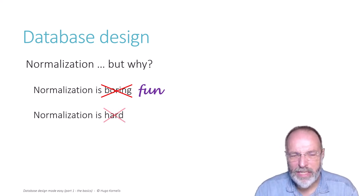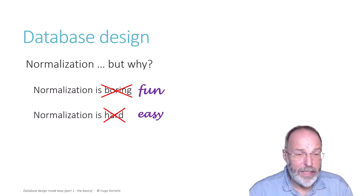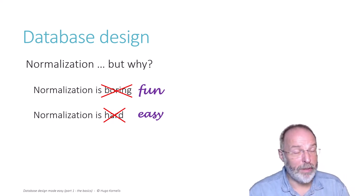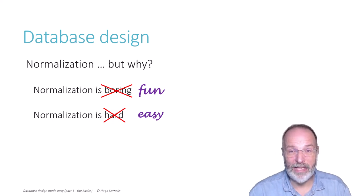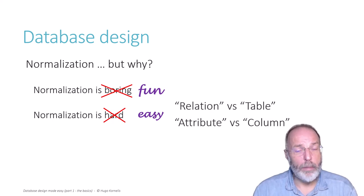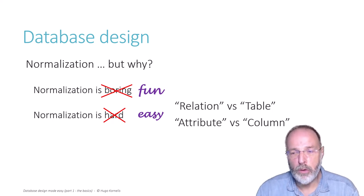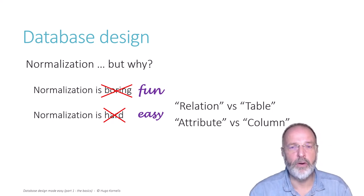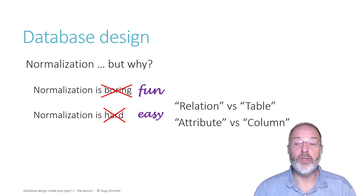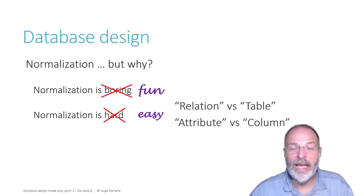I'm going to try to make it fun. Normalization is also said to be hard — well, I'm sorry, it isn't. Normalization is actually quite easy. The big problem is that many academics seem to make it a sport to make the explanations as boring and as hard to understand as possible. They will tell you a table is not a table, it's a relation, and you should use the term 'attribute' instead of 'column.'